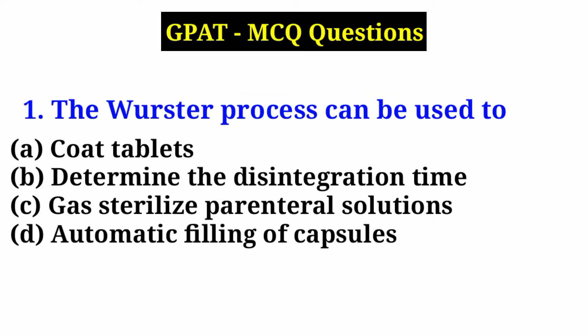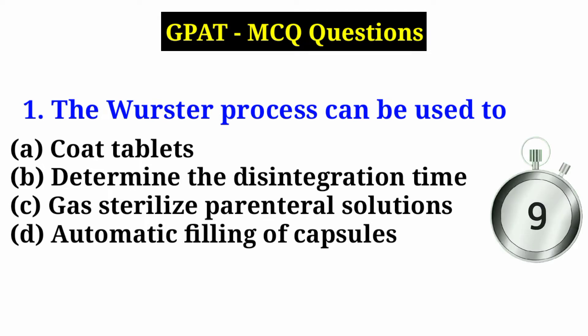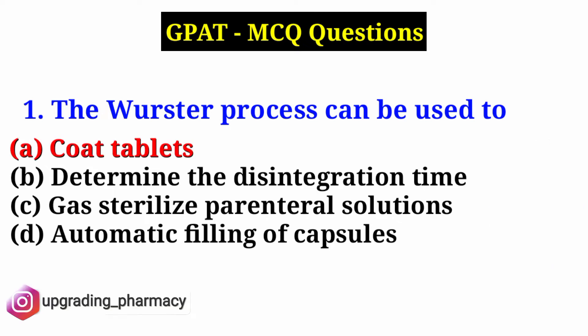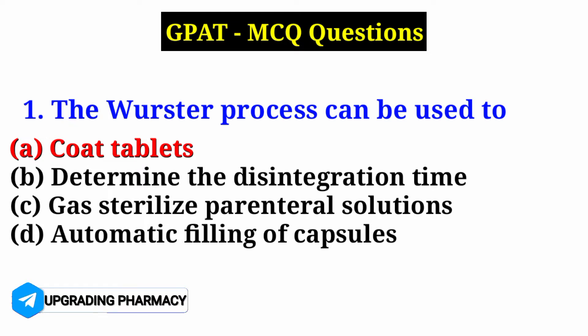Question 1: The Wurster process can be used for which option? Option A: coat tablets, Option B: determine the decision time, Option C: gas sterilize parenteral solutions, Option D: automatic filling of capsules. Answer is Option A — coat tablets. The Wurster process can be used for coating tablets.